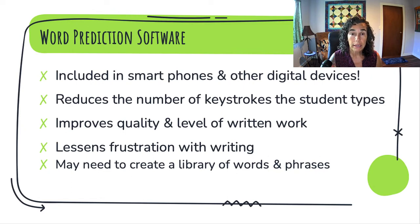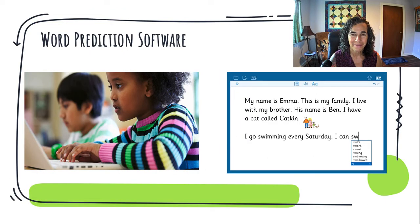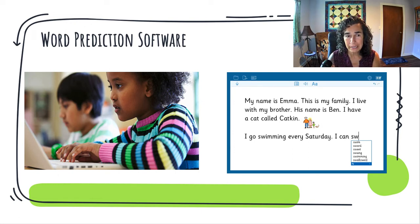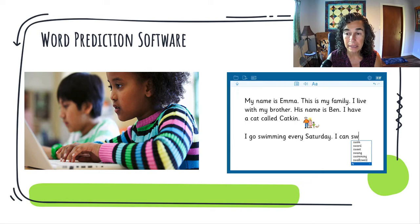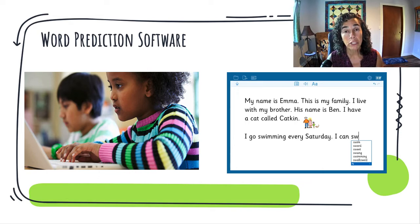There's a website showing a variety of different kinds of word prediction software and how it works — that's in your presenter notes. Here's an example: a child is typing on the computer. She's typing 'I go swimming every Saturday. I can SW—' and a little dialogue box pops up and she just needs to select what she's after.